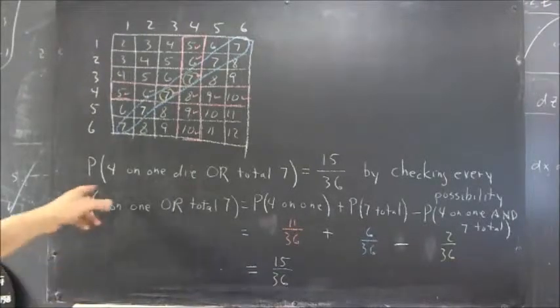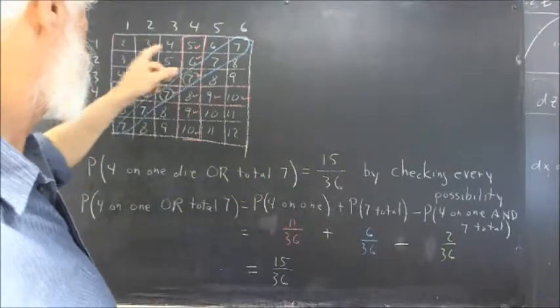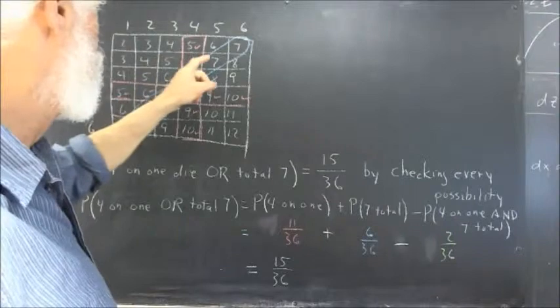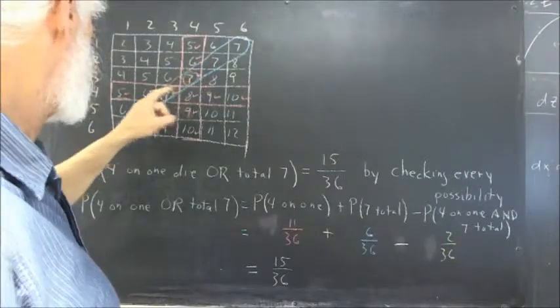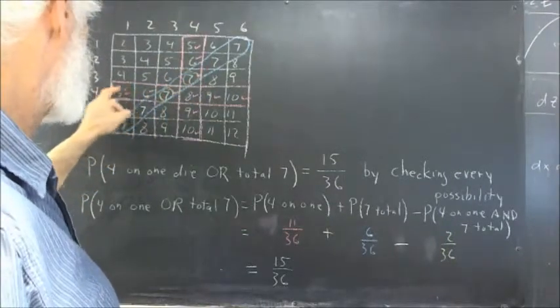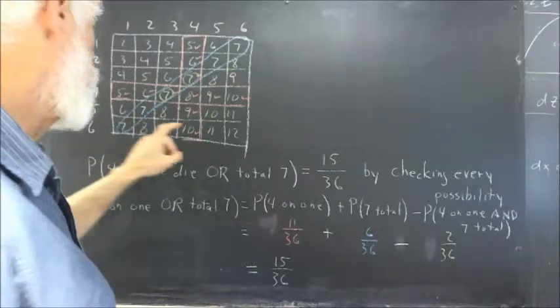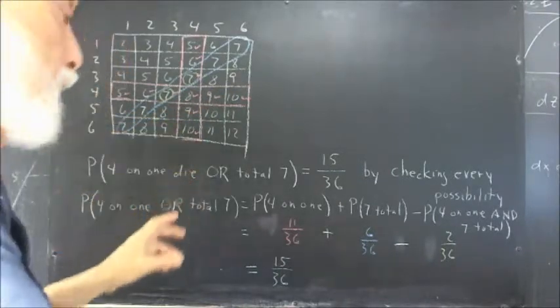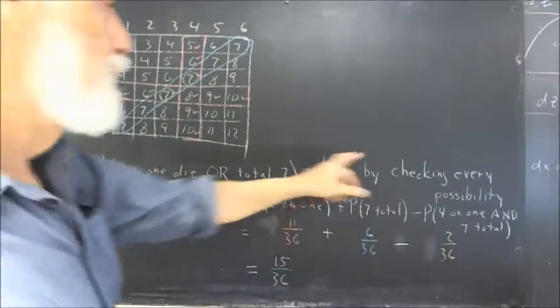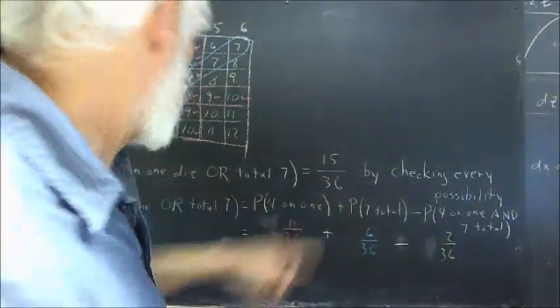By counting, just by counting, we can count: 1, 2, 3, 4, 5, 6, 7, 8, 9, 10, 11, 12, 13, 14, 15 outcomes fit our criteria. So, just by checking every possibility, we get this.